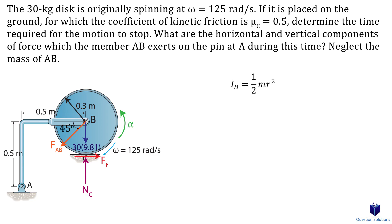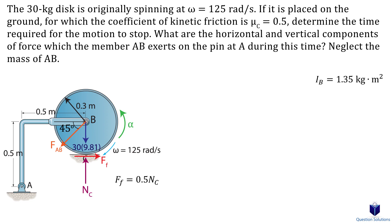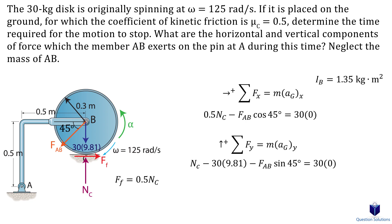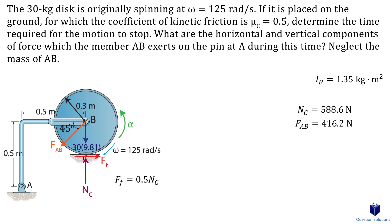The mass moment of inertia of the disk about point B uses the disk formula with mass 30 kg and radius 0.3 m. The frictional force equals the coefficient of kinetic friction times the normal force at C. For the x-axis equation of motion, the frictional force and the x-component of Fab sum to zero since the wheel doesn't translate horizontally. For the y-axis, the normal force, weight, and y-component of Fab sum to zero since the wheel doesn't move vertically. Solving these two equations simultaneously gives us the normal force and Fab.